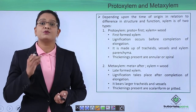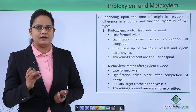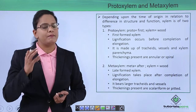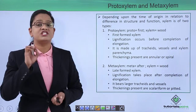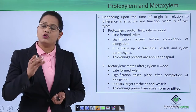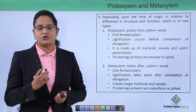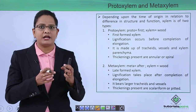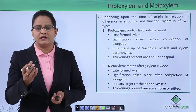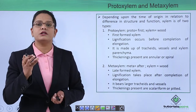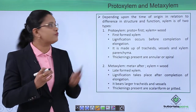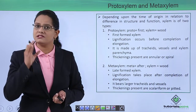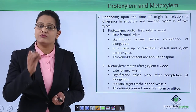The next types of xylem are proto xylem and meta xylem, classified on the basis of time of origin. These xylems differ in their structure as well as functions, and some cells are present in one type but absent in the other, because of differences in the time of origin.